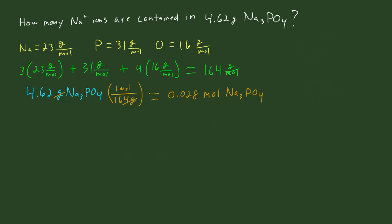Now here's the key part. We know that for one molecule of trisodium phosphate, we have three sodium ions. So there are three moles of sodium ions for every mole of trisodium phosphate. Basically, we multiply 0.028 by three — it's easier to see if you write it out that way.